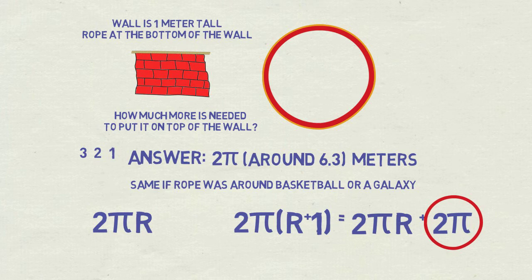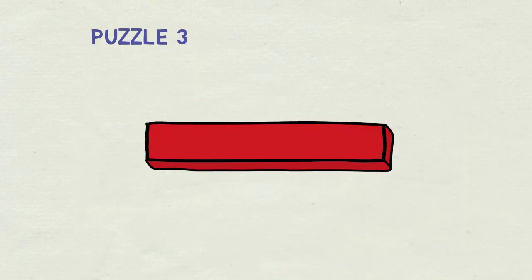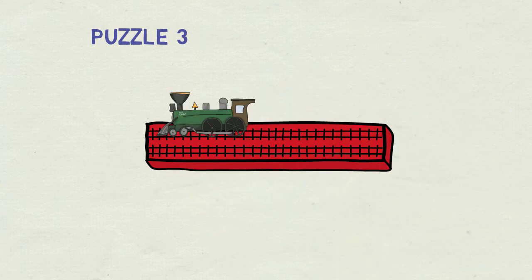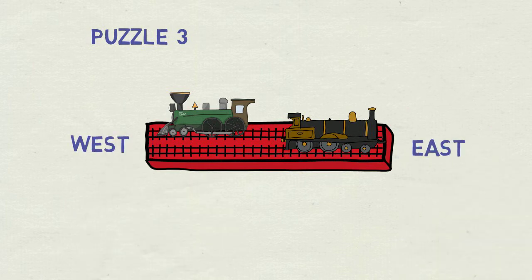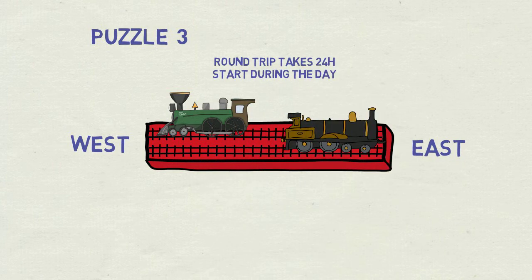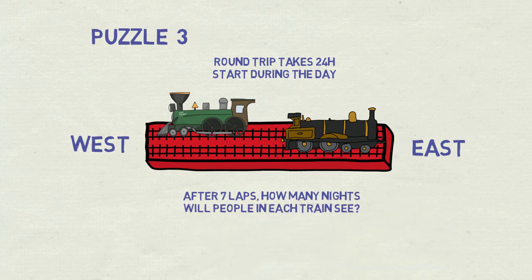Now it's time for third and final equator puzzle. The one I made myself. On top of our mighty wall, two railroad tracks are built. Two trains are close together, but each on its own track, facing opposite directions. Trains depart in the middle of the day with the same speed, allowing each to do a full lap in 24 hours. The question is, after 7 laps each, how many nights will people in each train experience? You have a moment to pause now to solve it.